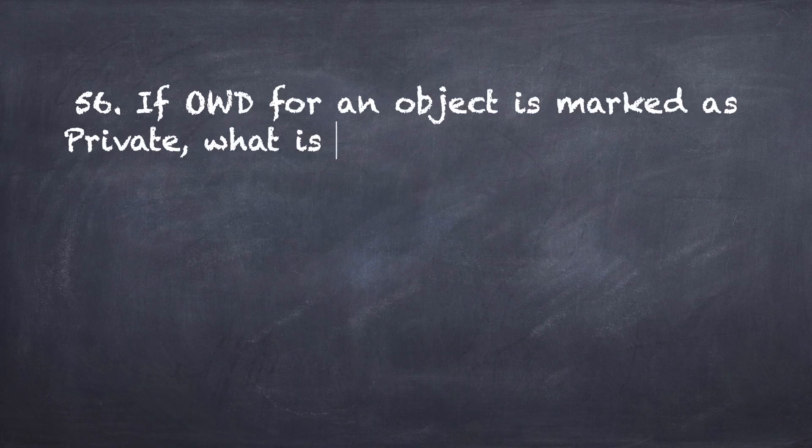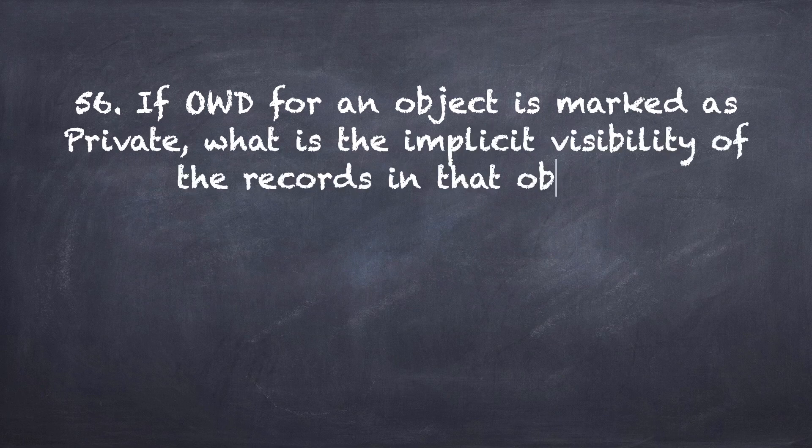Question number 56: If OWD for an object is marked as private, what is the implicit visibility of the records in that object?